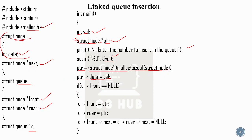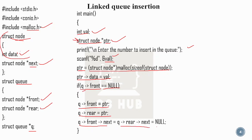If q front is equal to null — this is the initial insertion where the first element is being added to the queue. We need to update the queue variable. So if q front equals null, we set q front equal to pointer and q rear equal to pointer.